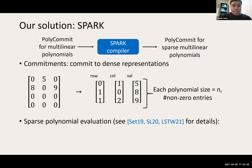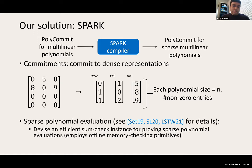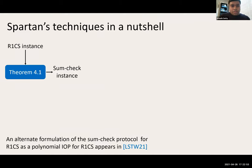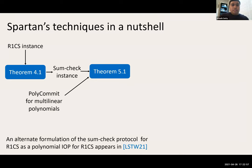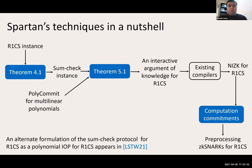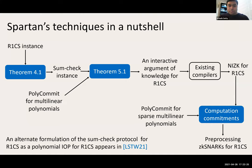In summary, we take an R1CS instance, turn it into a sum check instance, and apply the sum check protocol together with the polynomial commitment scheme to obtain an interactive argument of knowledge for R1CS. Using extended compilers like the Fiat-Shamir transform and a zero-knowledge transformation, we get a NIZK for R1CS. Combining this NIZK with computation commitments gives a preprocessing ZK-SNARK for R1CS. The computation commitment relies on a polynomial commitment scheme for sparse multilinear polynomials, which is provided by the Spark compiler.